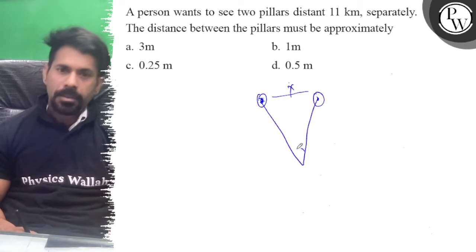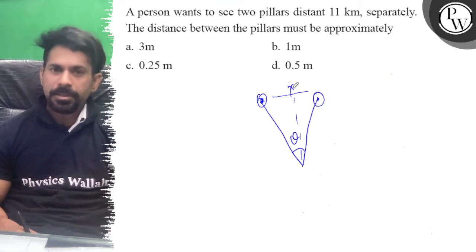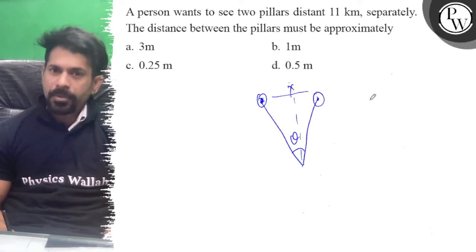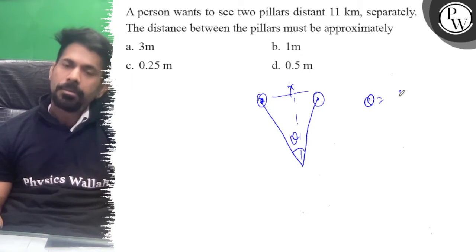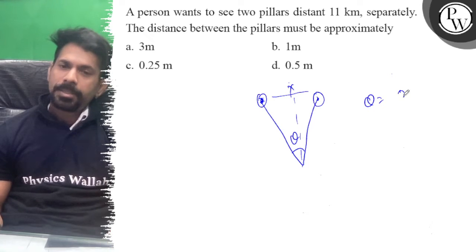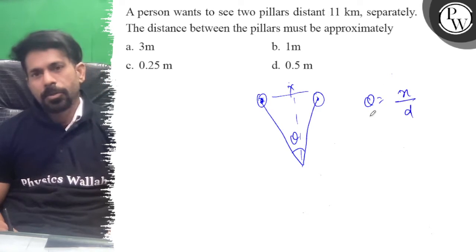And that is your theta, so theta is equal to x by d, where d is the distance. Theta equals r, which is radius into angle, so x by d, where d is the distance.